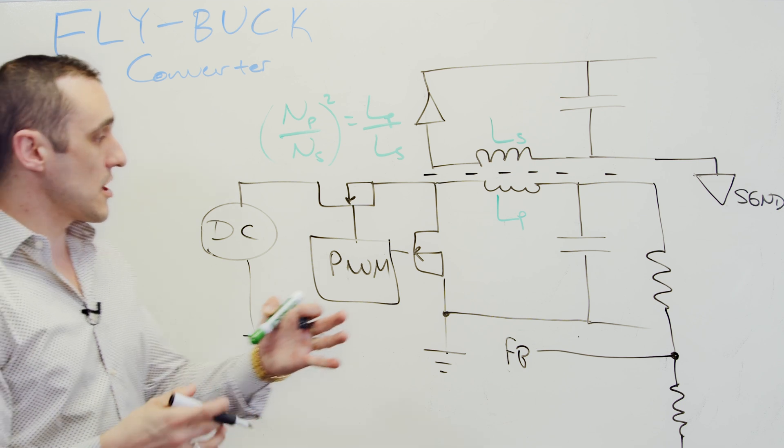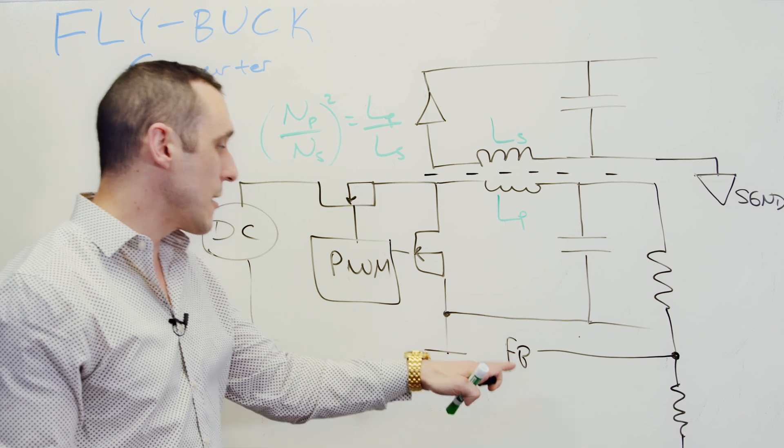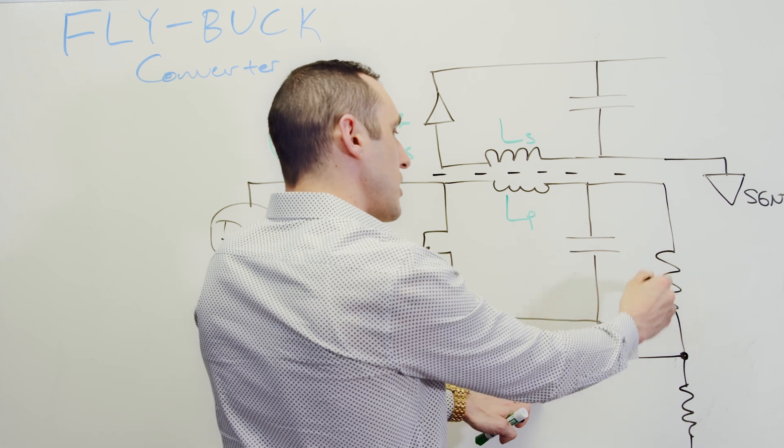So all of those buck converter or boost converter controller ICs that you see that use feedback, they will have a feedback pin on them. Generally what you do is you take the output voltage, drop it over a voltage divider that uses very large resistors.